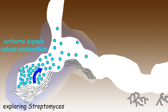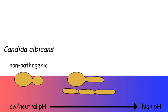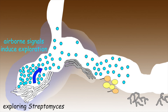This pH-responsive change in the behaviour of Streptomyces colonies is reminiscent of the fungus Candida albicans, which switches from a non-pathogenic yeast form at lower neutral pH into a pathogenic filamentous form when the pH rises. The pH-altering TMA compound produced by exploring Streptomyces also has antimicrobial properties, and effectively inhibits the growth of other types of bacteria.